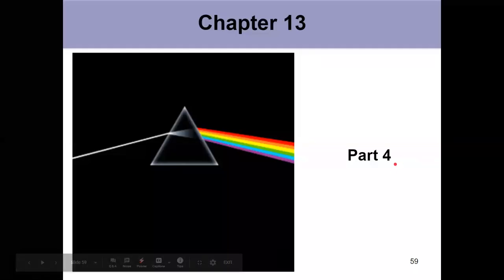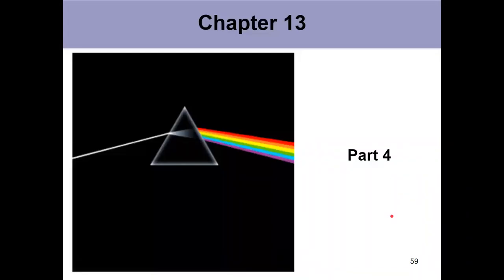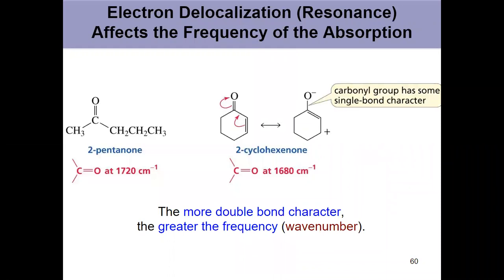In part four of chapter 13, we're discussing part two of IR, which is three parts total. Parts three, four, and five from chapter 13 are all about IR. This is the middle installment where we'll discuss why absorption bands show up at different frequencies and how some are wider than others.